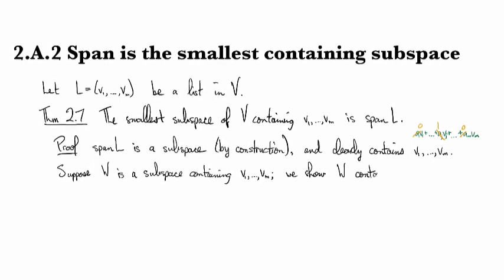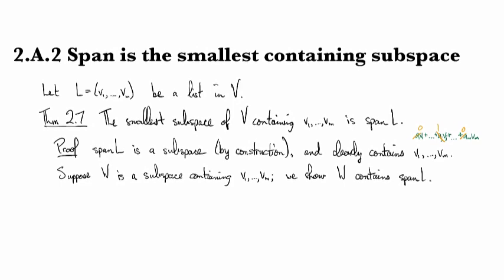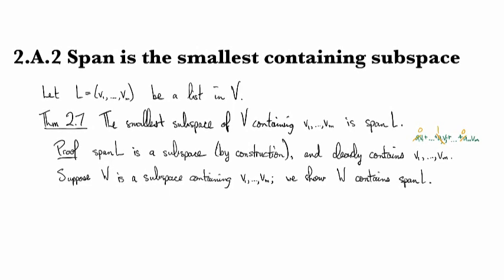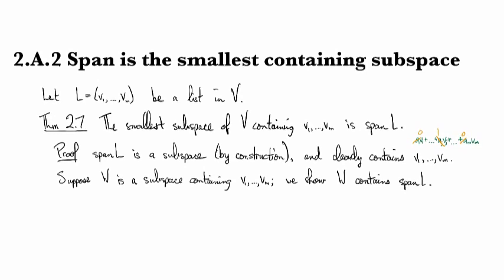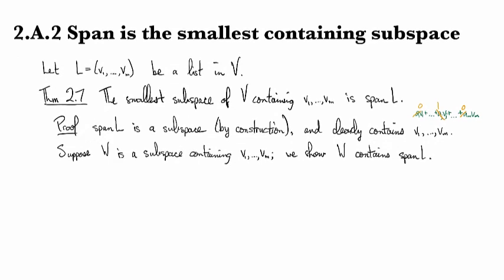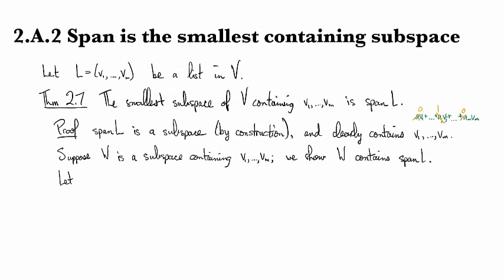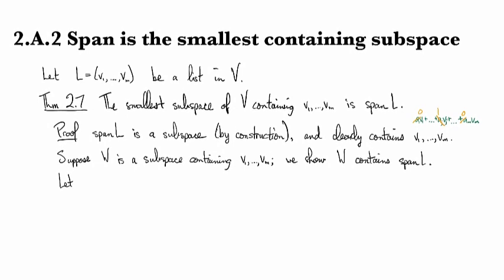Then we show that W contains the span. If I show that any subspace contains the span, then the span has to be the smallest subspace that does the job and contains those vectors. So I'm going to show that the span is contained in W. Let's take something from the span.